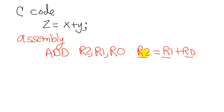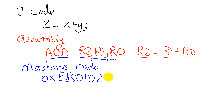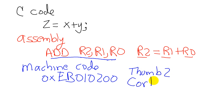And lastly, what the computer sees is machine code — ones and zeros. This particular assembly instruction, when it shows up in memory, is going to be the hexadecimal value EB010200. You can see that this is a 32-bit instruction. In our computer, which executes Thumb2 code on the Cortex-M processor, the instructions are 32-bit long. It turns out we also have instructions which are 16-bit long.